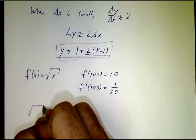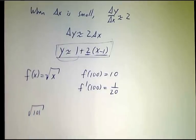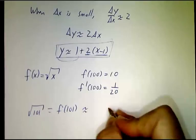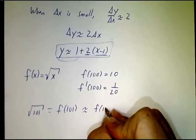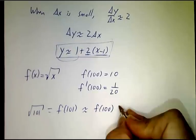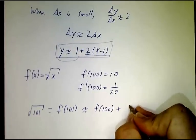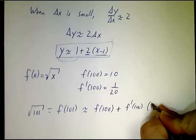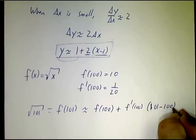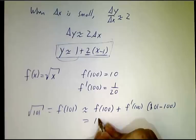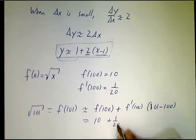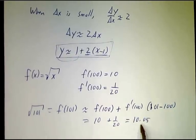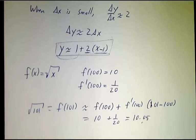So what is the square root of 101? Well, that's f(101), which is approximately f(100), that's where you started from, plus the slope times how far you've moved sideways. So that's 10 plus 1/20, which is 10.05. That is an extremely accurate approximation to the square root of 101.